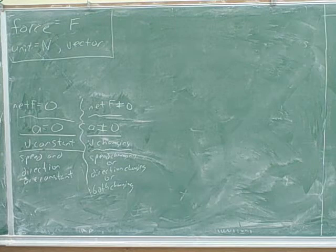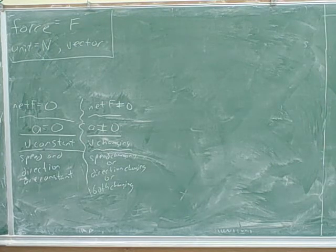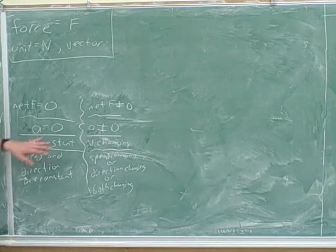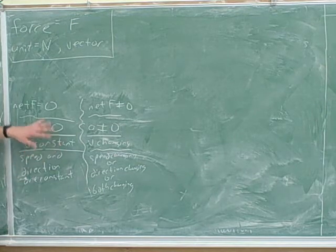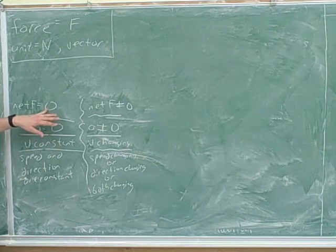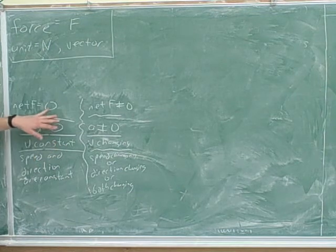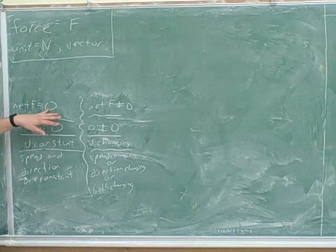I should talk a little bit more about this concept of net force. Net force means we have to add up all the individual forces on the object. So, if the acceleration is zero, that doesn't mean that there are no forces on the object. It just means they're canceling out. If the acceleration is zero, there could be no forces. Or it could be that all the forces are canceling each other out.